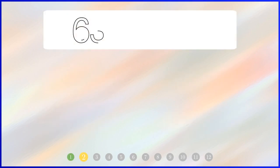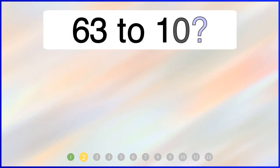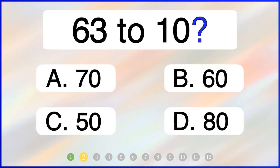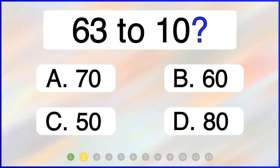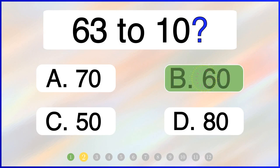What is 63 rounded to the nearest 10? The correct answer is option B: 60.